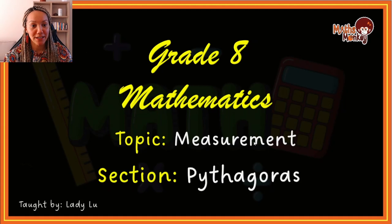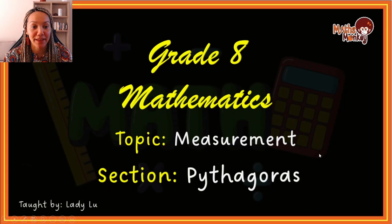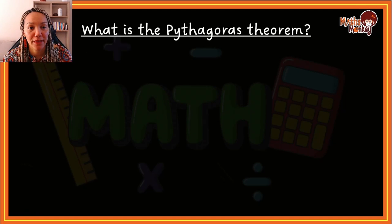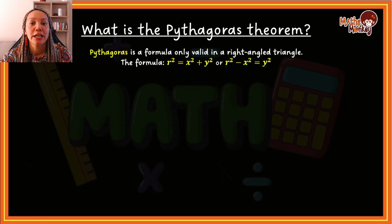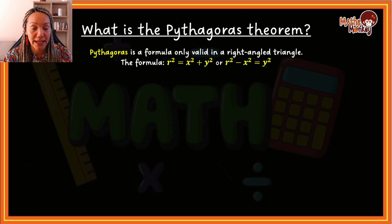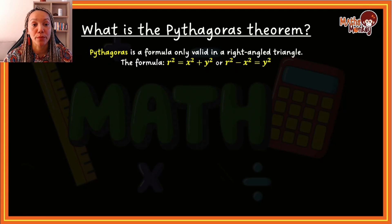This is our first video on measurement and we are looking at Pythagoras. So what is the Pythagoras theorem? It is a formula only valid in a right angle triangle, and the formula is r squared equals x squared plus y squared, or if we manipulate that equation it becomes r squared minus x squared equals y squared.